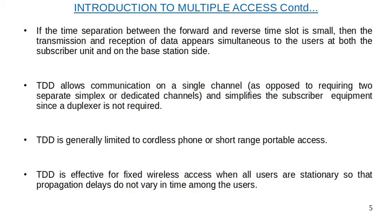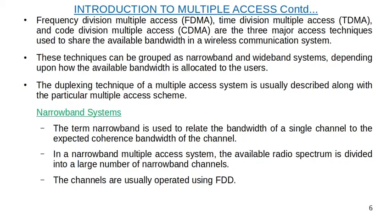The three major access techniques used to share available bandwidth in a wireless communication system are frequency division multiple access (FDMA), time division multiple access (TDMA), and code division multiple access (CDMA). These techniques can be grouped as narrowband and wideband systems depending upon how the available bandwidth is allocated to users. The duplexing technique of a multiple access system is usually described along with the particular multiple access scheme.